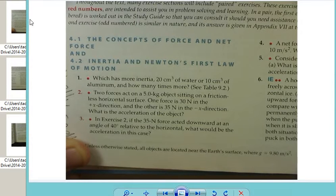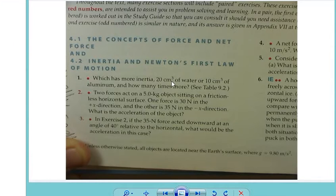For problem number one, it asks us which has more inertia: 20 cubic meters of water or 10 cubic - I'm sorry - centimeters, cubic centimeters of water. I'm going to say cc, because one cubic centimeter or one centimeter cubed is one cc. So I'm going to say 20 cc's of water or 10 cc's of aluminum.